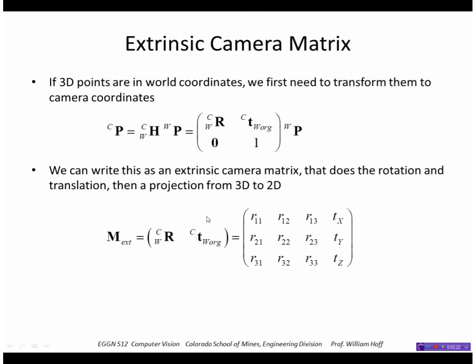Be careful about the direction of these transforms. This is the world to camera rotation and the world origin in camera coordinates. So we can call that the extrinsic camera parameter matrix.